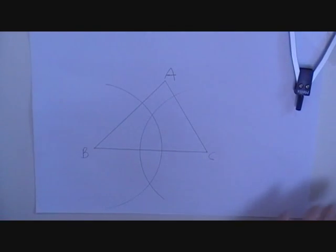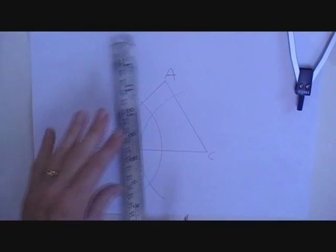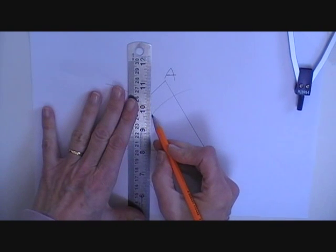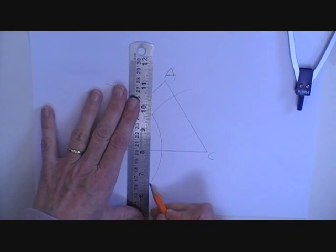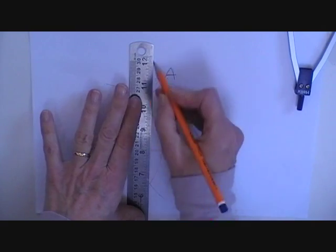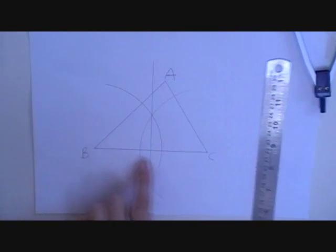Where the two arcs intersect I join up and that is going to be my perpendicular bisector. This is the perpendicular bisector of the line segment BC.